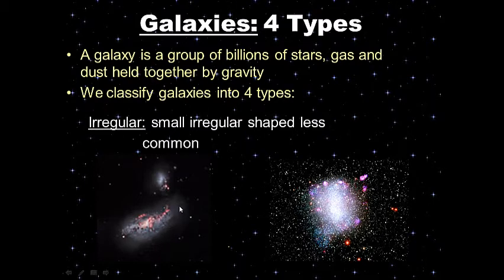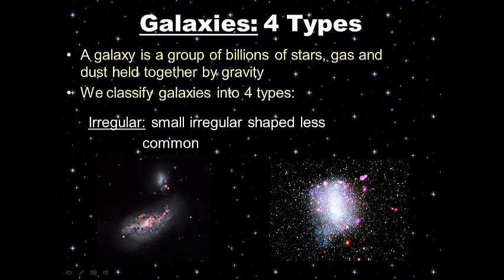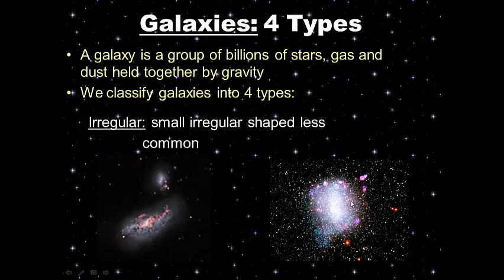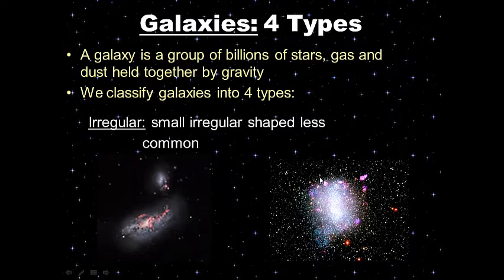Finally, we have irregular galaxies — really funky, weird-shaped galaxies. They're still galaxies because they're made up of billions of stars and held together by gravity, but they are not very common and they have an irregular shape.